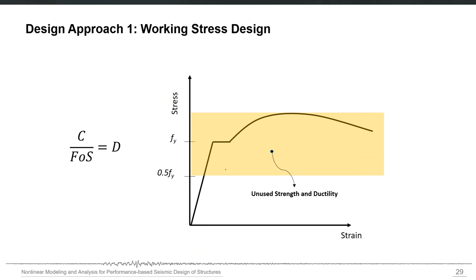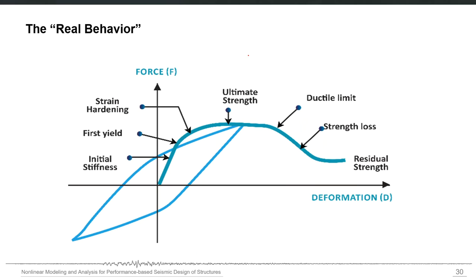Working stress design was based on the idea that we can simply apply the factor of safety to the capacity. We don't go up to the ultimate capacity; we apply a reduction factor and only use that reduced capacity for structural analysis. All load effects should use the capacity only up to that reduced point, meaning there can be a significant part of unused strength and ductility which was not recognized in working stress design.